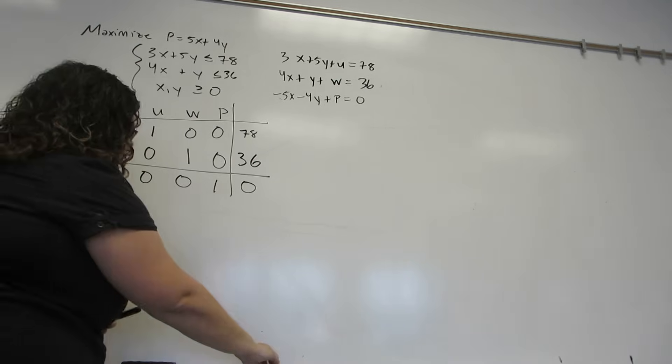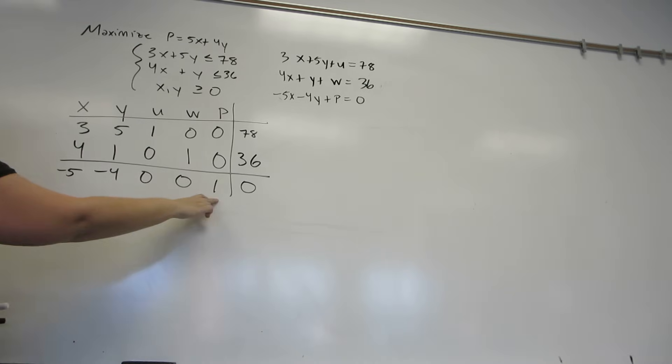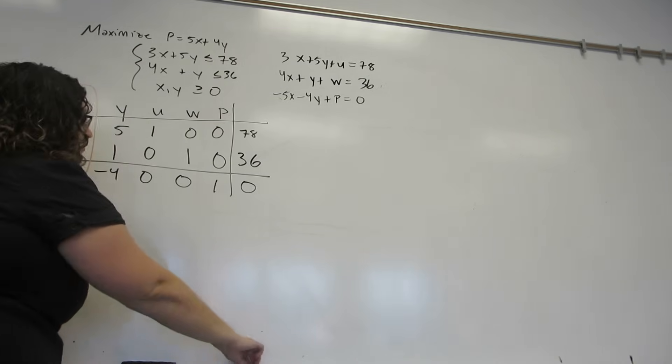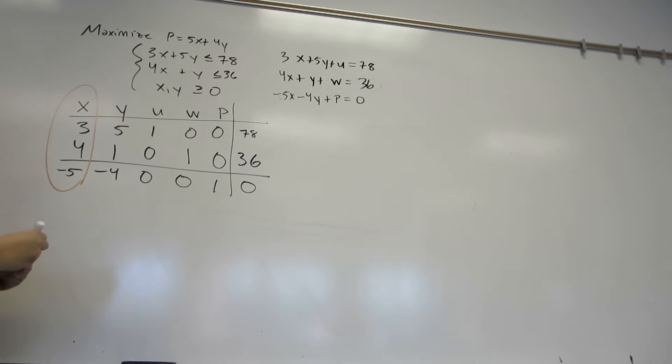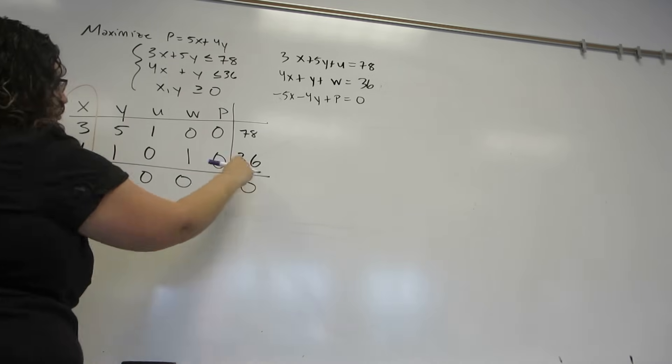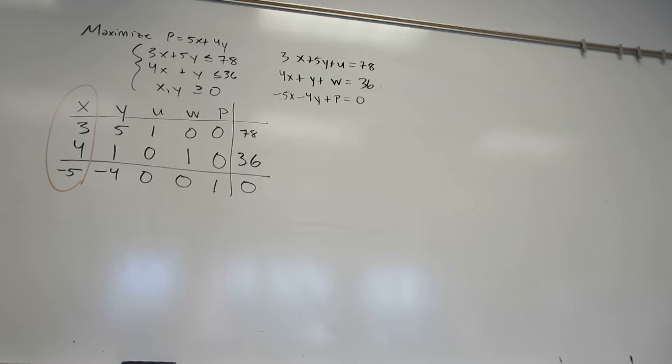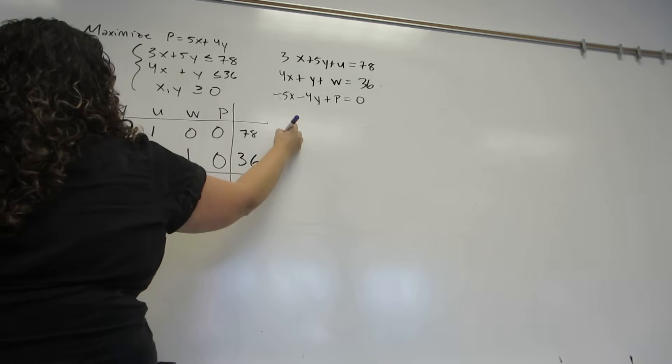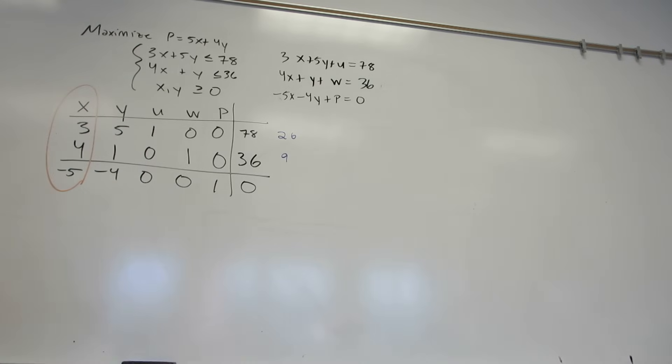Now, if we need to choose a pivot position, we go across the bottom row until we hit the vertical bar and say what is the largest negative number. And that's going to choose our pivot column. Then I want to choose which row is going to be our pivot row. So I'm going to take the numbers in this column and divide them into the numbers in the constant column, meaning the numbers on the far right side. And I get 26 and 9. Now, which of those numbers is smallest? The 9. And that's what chooses our pivot row. So the 4 is our pivot element.